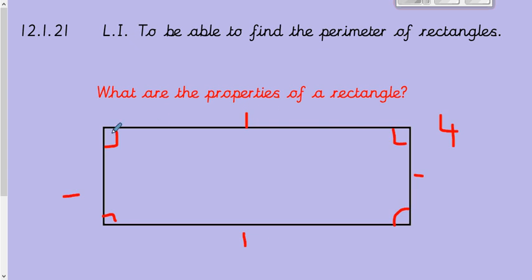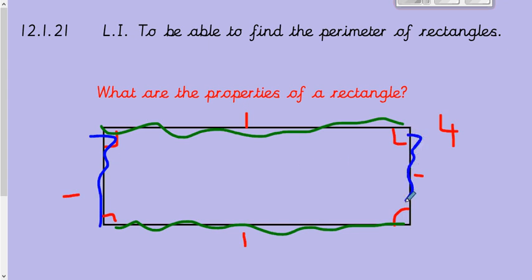And you will notice with a rectangle, if I do it in a different colour, these sides in green are always the same length. And if I do the other ones in blue, these sides are always the same as well. That's something important to remember when we're working out perimeter.